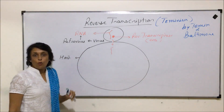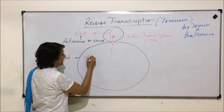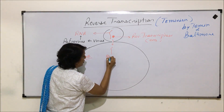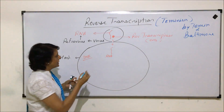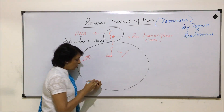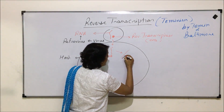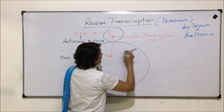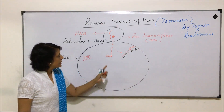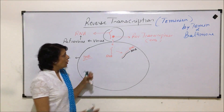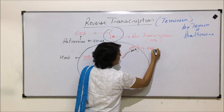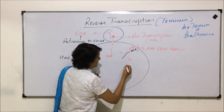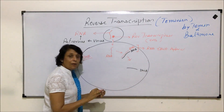The virus injects its RNA into the host cell. This host cell has its own DNA as genetic material. This injected RNA now produces a DNA molecule — the black line represents DNA and the red one is RNA. There is a stage where there is an RNA-DNA hybrid, and then these two strands separate.